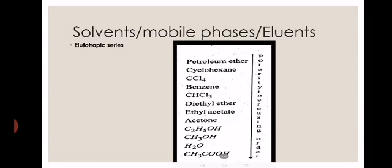In the elutotropic series, solvents range from petroleum ether (least polar) to acetic acid (most polar). The series includes: petroleum ether, cyclohexane, carbon tetrachloride, benzene, chloroform, diethyl ether, ethyl acetate, acetone, ethanol, methanol, water, and acetic acid. These are the general eluents or solvents used in chromatographic techniques.